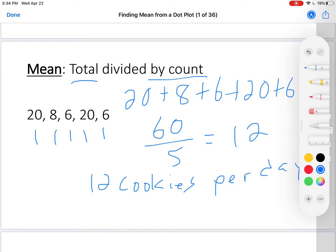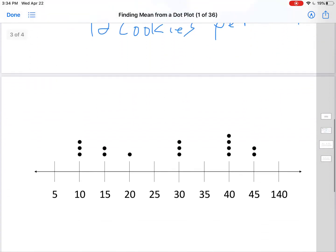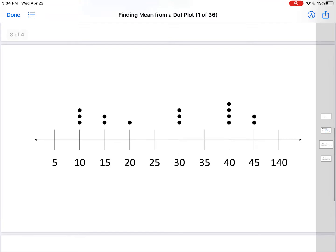Well, that's probably too many cookies. But nonetheless, let's move on. Here is a different set of data set up in a dot plot. Let's find the mean.